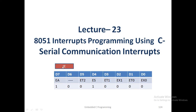This is the Interrupt Enable register. You need to configure this register if you want to use the serial communication interrupt for your application. It is the D4 bit — ES, Enable Serial communication interrupt. You can make this bit as 1, as well as the EA bit, which is the global interrupt enable. Then only the interrupt is going to be generated for the serial communication application.